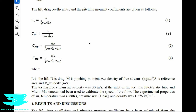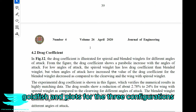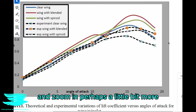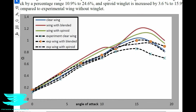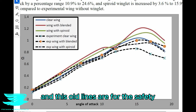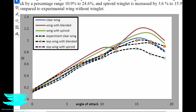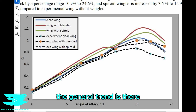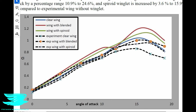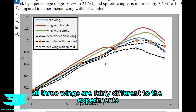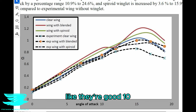Let's look at the results. In figure 11, we see the lift coefficient plots for the three configurations for experiments and CFD. The results are very strange. The dashed lines are for the experiments and the solid lines are for the CFD. Let's address the elephant in the room and say that the CFD didn't really match the experiments very well. The general trend is there and the stall angle is pretty good, but the CFD shows that for much of the slope of the lift coefficient all three wings are fairly different to the experiments — like 10 to 20% off the results.